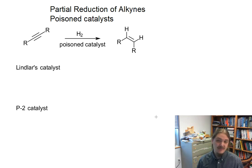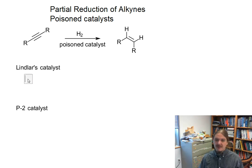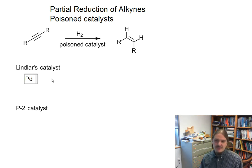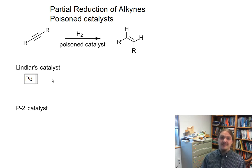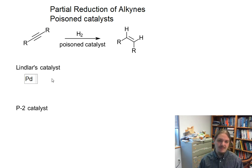There are two commonly used poison catalysts, and Lindler's catalyst is perhaps the most commonly used. Lindler's catalyst has been around since the 50s. Lindler himself was interested in the laboratory synthesis of unsaturated fatty acids. All the alkenes in unsaturated fatty acids are cis alkenes — at least the naturally occurring ones are — and so in order to synthesize them in a laboratory he needed a reliable way to get cis alkenes. Partial reduction of an alkyne was a pretty good way to go.